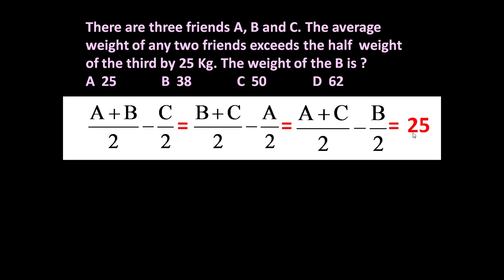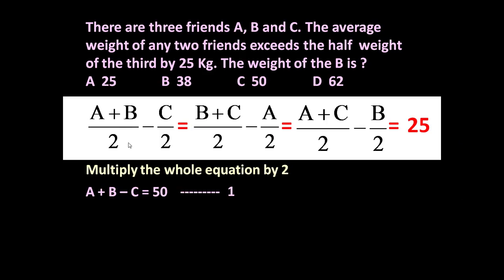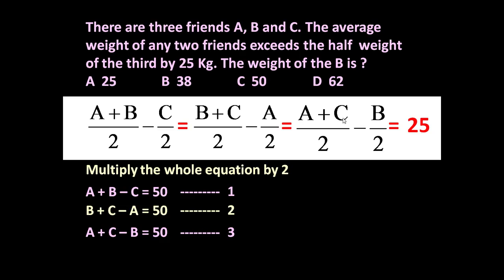The difference in each case is 25 kg. So if we multiply each equation by 2, we get three equations: A + B − C = 50, B + C − A = 50, and A + C − B = 50.